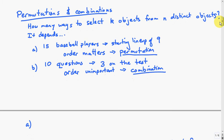Another concept we're going to find useful is permutations and combinations. This is basically a way to answer the question: how many ways can I select k objects from n distinct objects? The answer depends on whether order matters or not. If I have 15 baseball players and want to choose a starting lineup, order matters, so we use permutations. If an instructor has 10 questions and puts 3 on a test, order is unimportant, so you would use a combination.